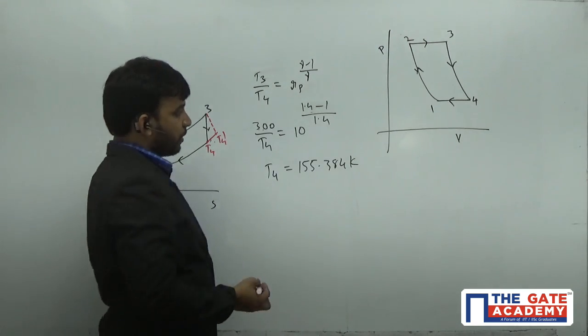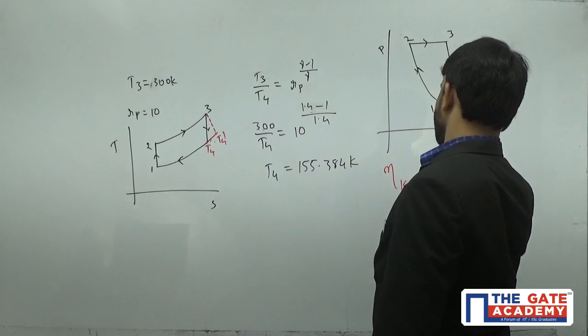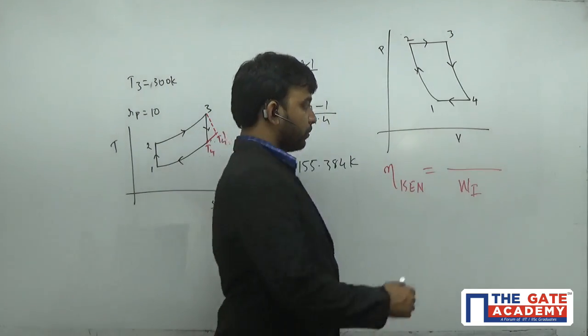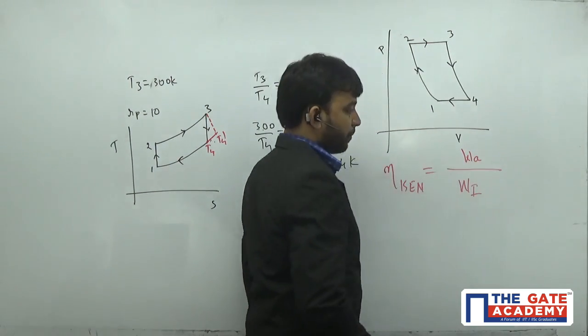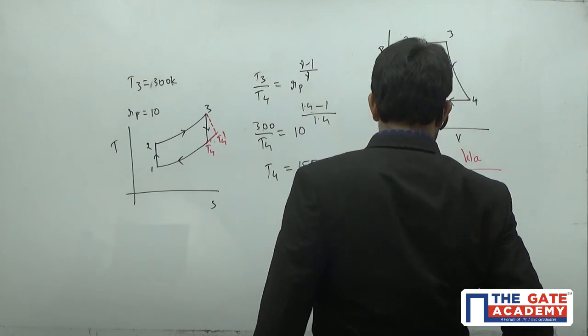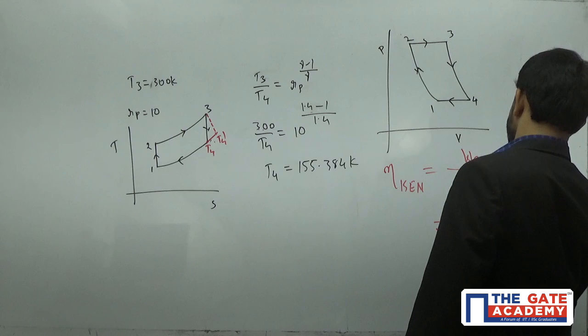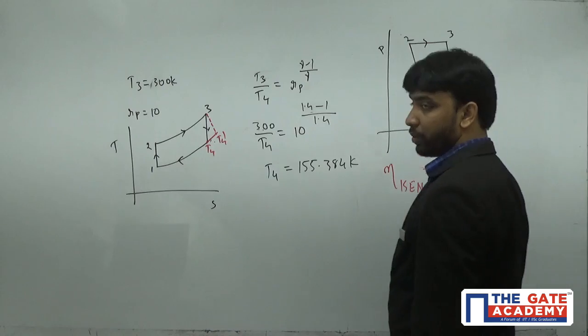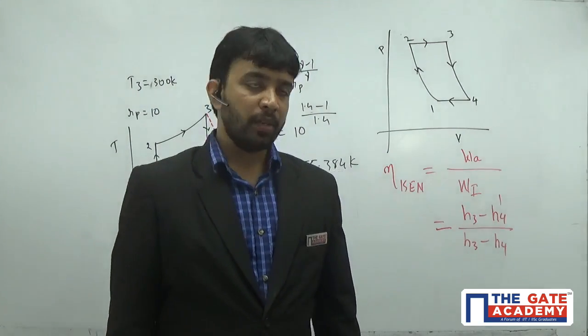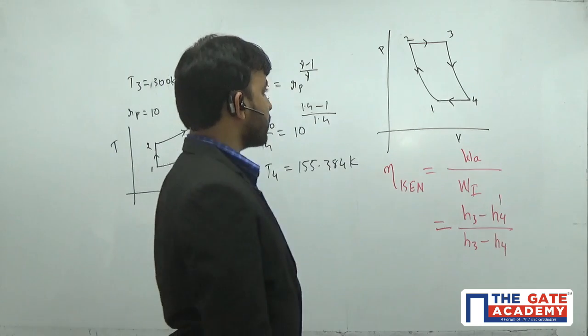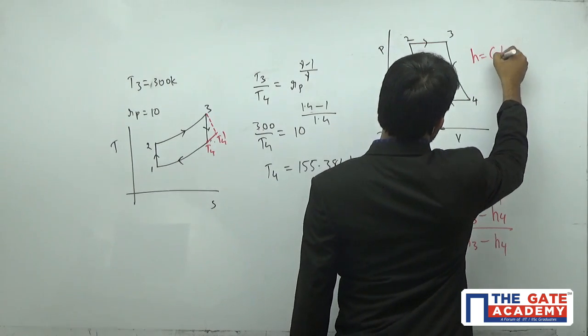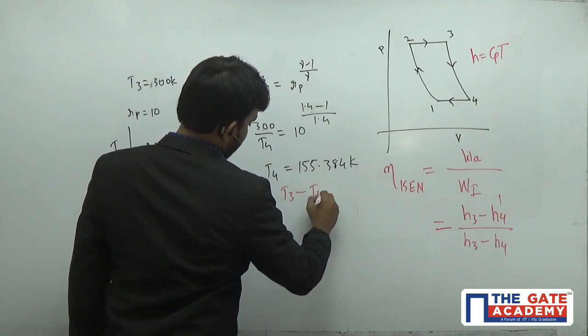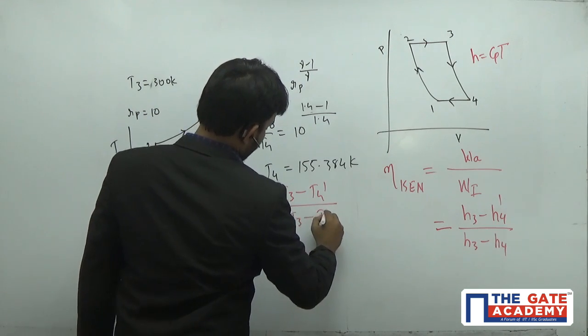He gave isentropic efficiency. Isentropic efficiency for a turbine is the ratio of actual work to ideal work. Actual work done by the turbine is H3 minus H4 dash, and ideal work done is H3 minus H4. In a gas turbine, the working fluid is an ideal gas. For ideal gases, I can write enthalpy as Cp times T. Therefore, isentropic efficiency reduces to T3 minus T4 dash divided by T3 minus T4.